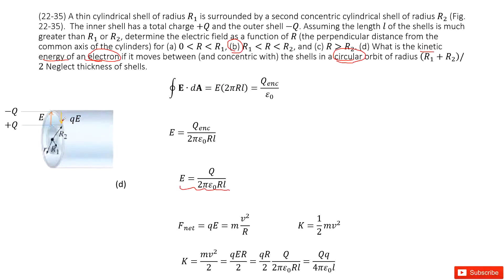The centripetal force equation gives us: Q times E equals mass times V squared divided by R. We want the kinetic energy, which is one-half mV squared, so we need to find mV squared. From the force equation, mV squared equals QE times R. We then substitute the electric field expression from the between-shells case, and R cancels, giving us our final answer for the kinetic energy.